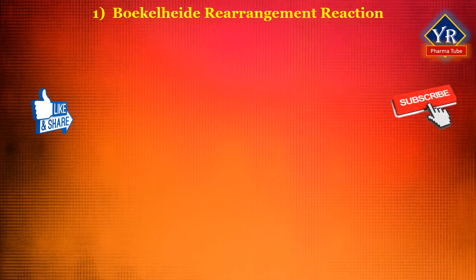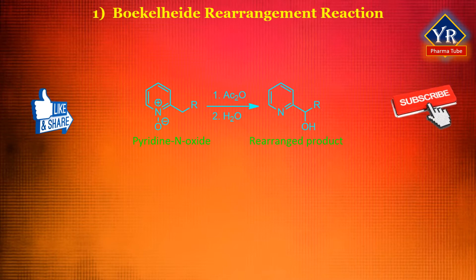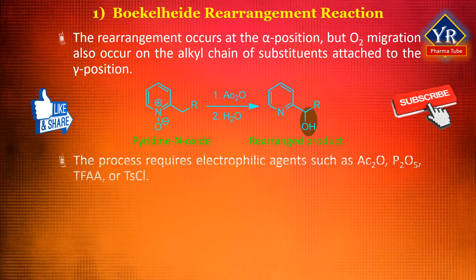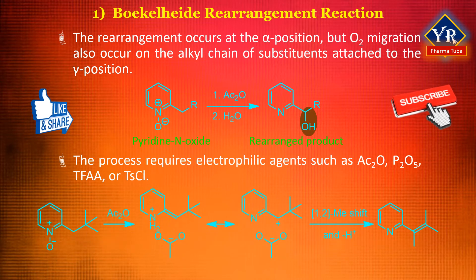Boekelheide reaction. This reaction involves the treatment of pyridine N-oxides with acylating agents to form rearranged products. Traditionally, the rearrangement occurs at the alpha position, but oxygen migration could also occur on the alkyl chain of substituents attached to the gamma position. This process requires the activation of pyridine N-oxides by electrophilic agents such as acetic anhydride, as shown in the reaction.